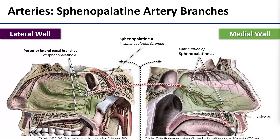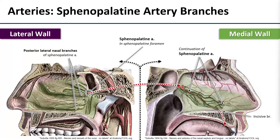The branch from the maxillary artery that supplies the nasal cavity is the sphenopalatine artery, which enters through the pterygopalatine fossa and then through the sphenopalatine foramen in the lateral nasal wall. On the lateral wall it gives off posterior lateral nasal branches that travel on the surface of the middle and inferior nasal conchae and into their meatuses. The bulk of the artery then crosses over to the nasal septum and travels anteriorly and inferiorly, with the incisive branch passing through the hard palate to supply the anterior hard palate.